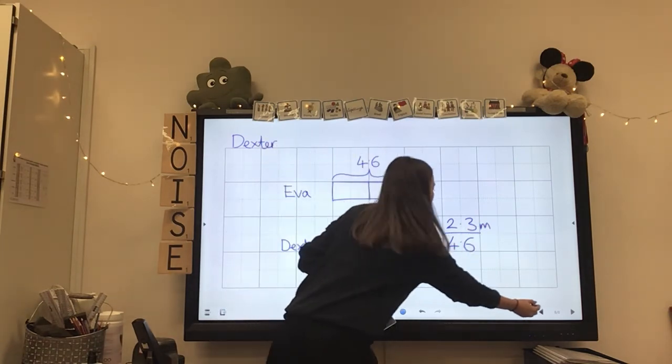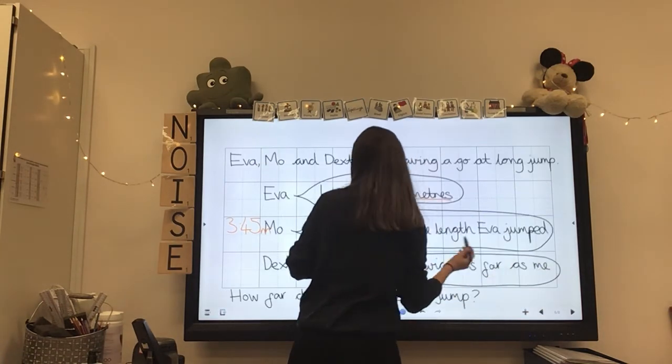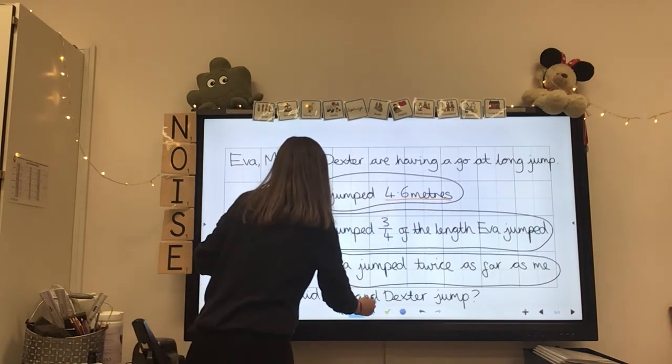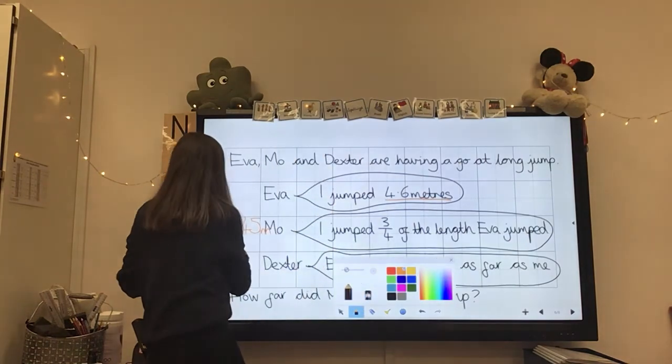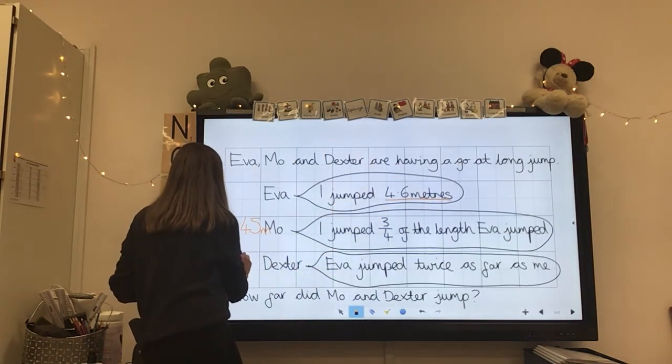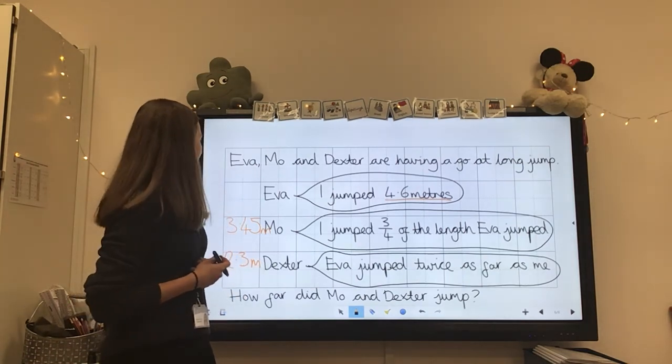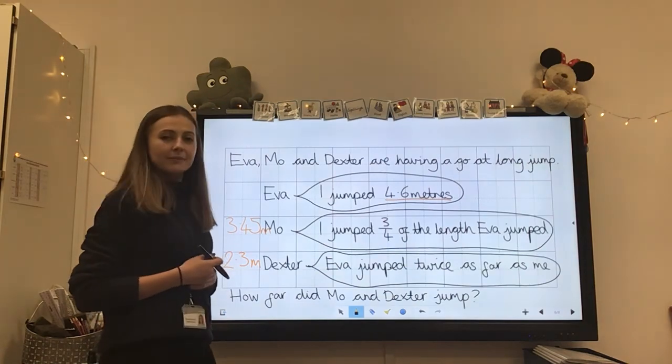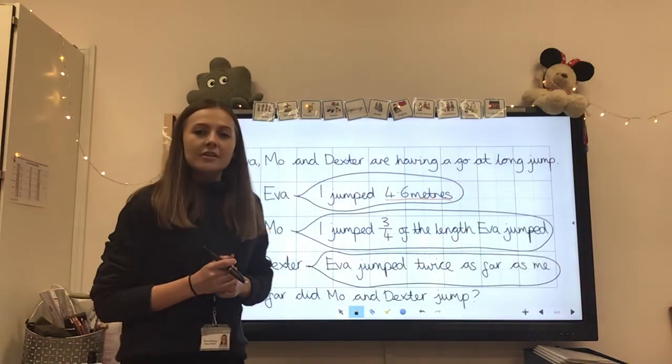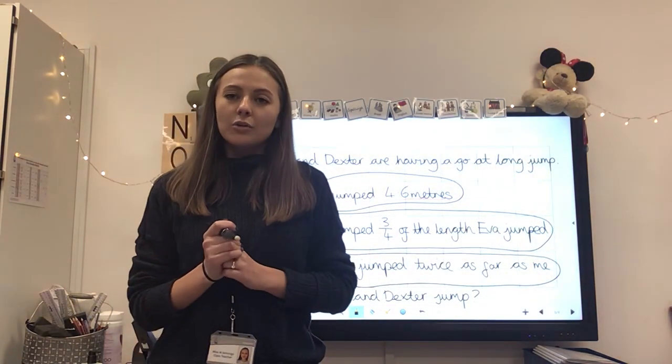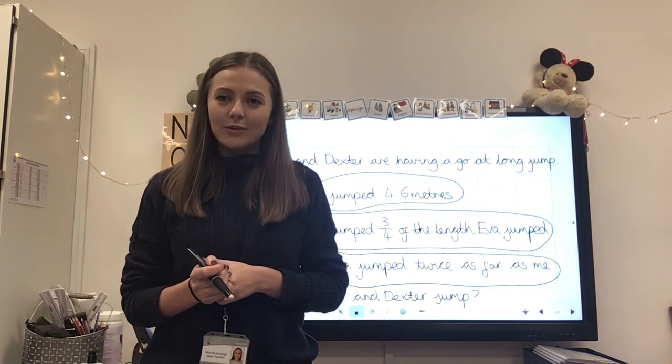Lovely. So let's go back to our question. There we go. Dexter jumped 2.3 metres. So we can actually see that Eva definitely jumped the furthest. Okay, lovely. So now, look at your worksheet and see if you can answer the rest of the questions.